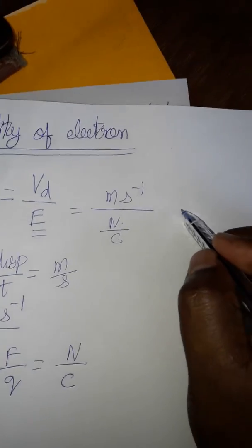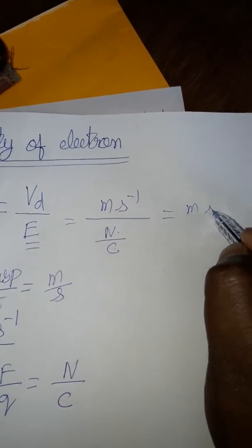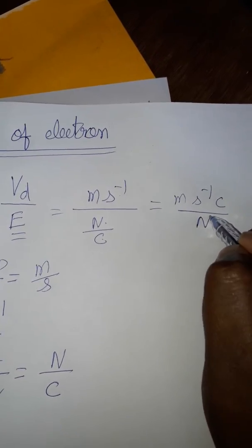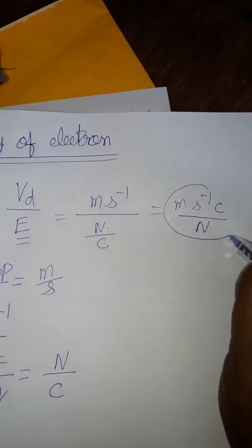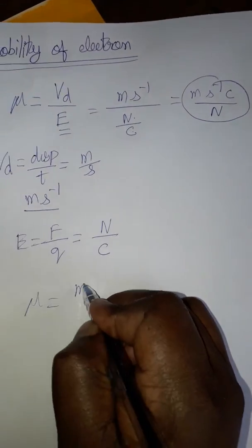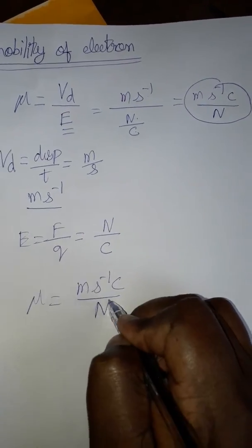Mobility of the electron will be meter second inverse coulombs by Newton. So now we know drift velocity unit will be meter second inverse coulombs by Newton.